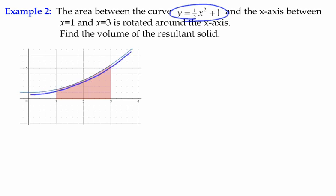We've got just a section of that, the area under the curve from x equals one to x equals three. If we were to rotate that around the x-axis we would end up with a shape which looks something like that, a three-dimensional solid.